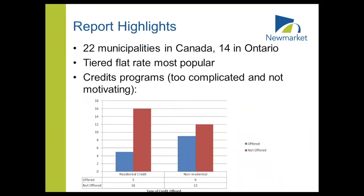Some highlights from the report — this is a summary from around November of last year, so some of it may have changed. The tiered flat rate was most popular among municipalities. Credit programs, if offered, are usually available mostly to the non-residential sector — industrial and commercial — not so much to residential. And where they do exist, credit programs are often too complicated and don't really motivate behavior change.